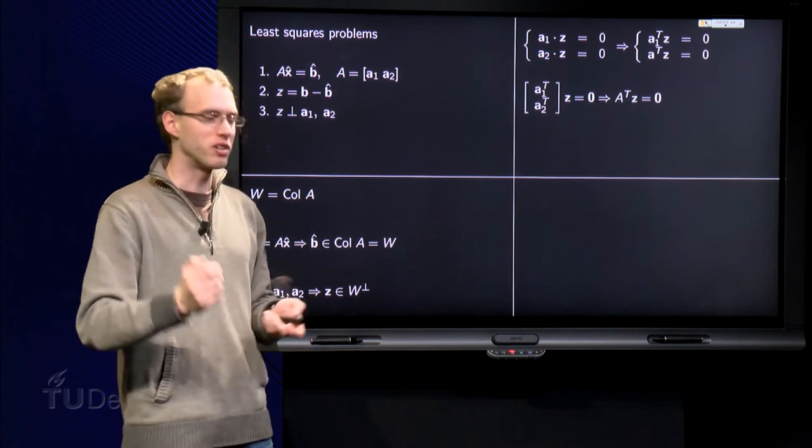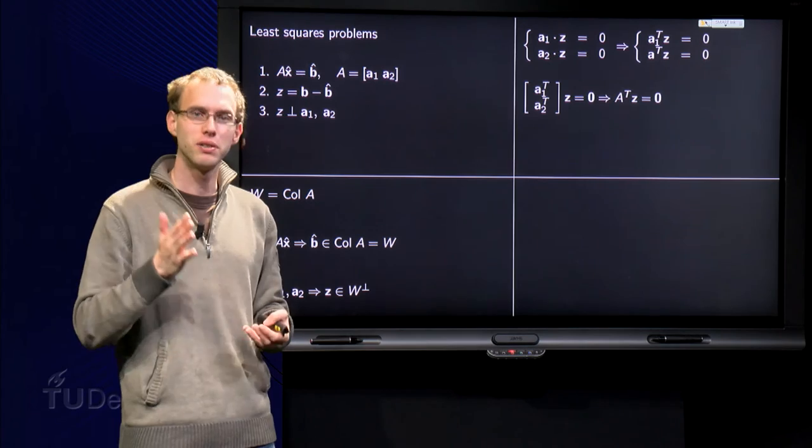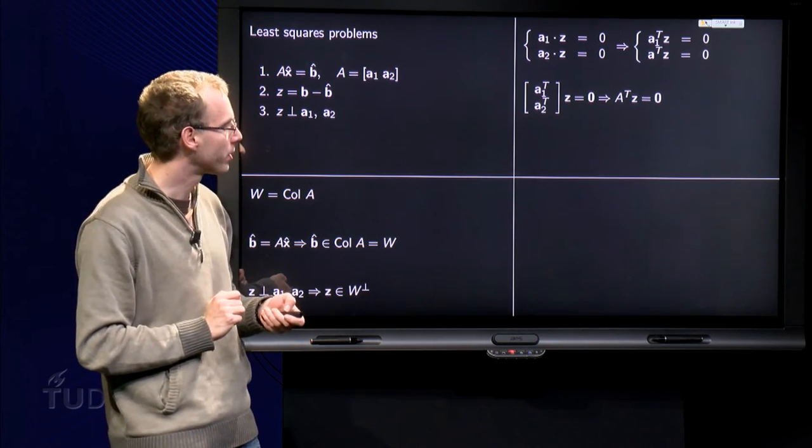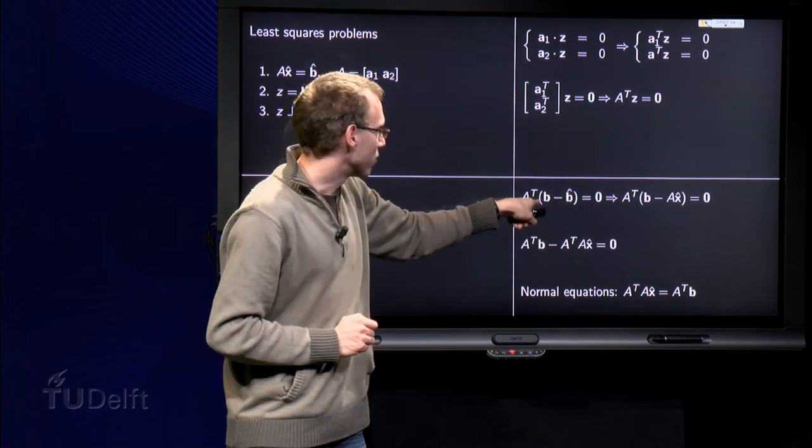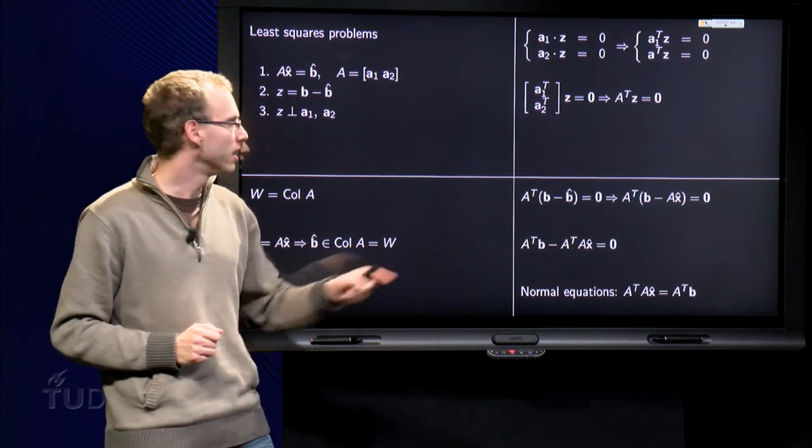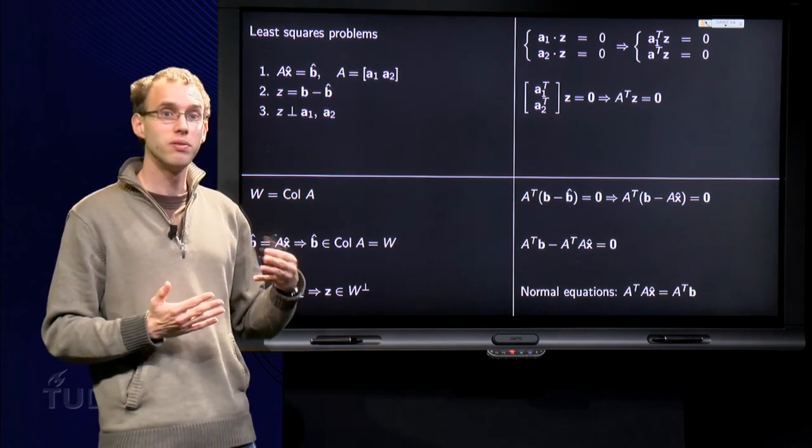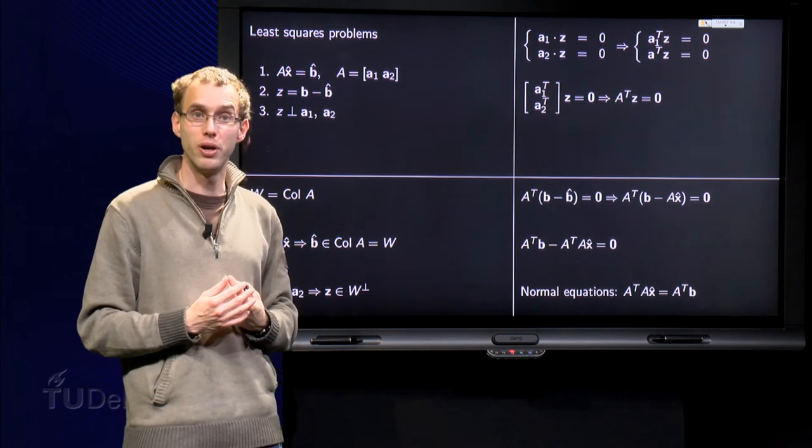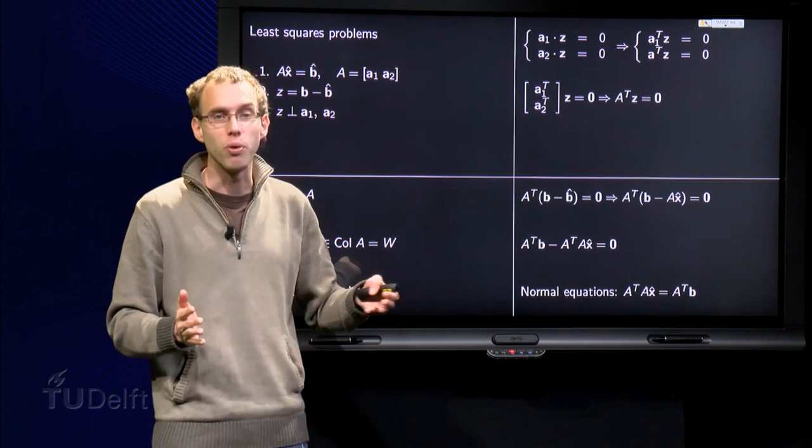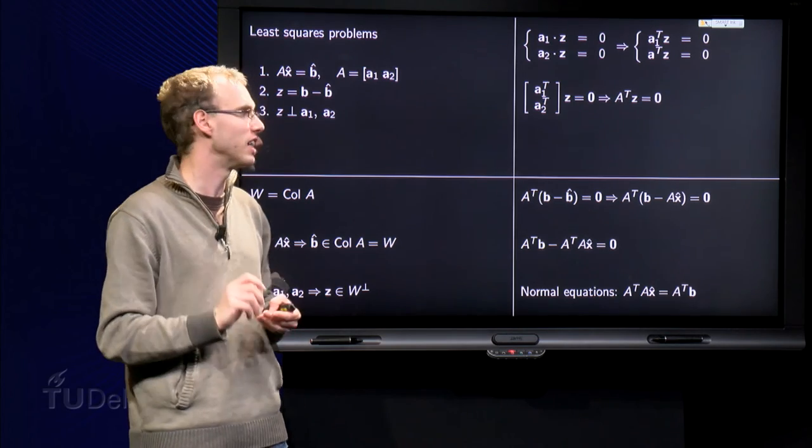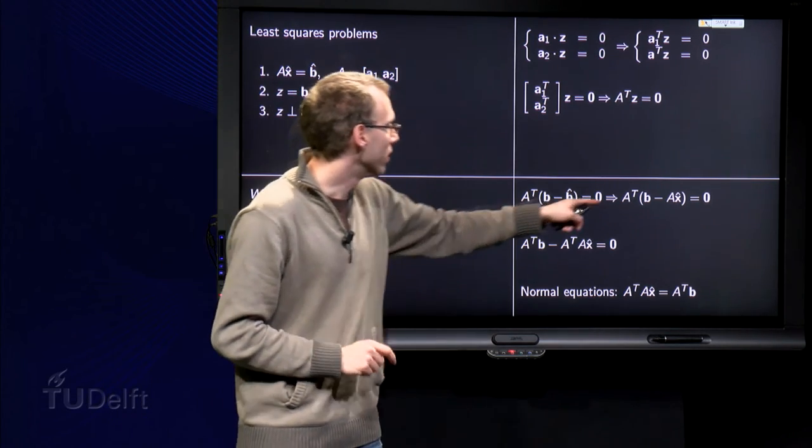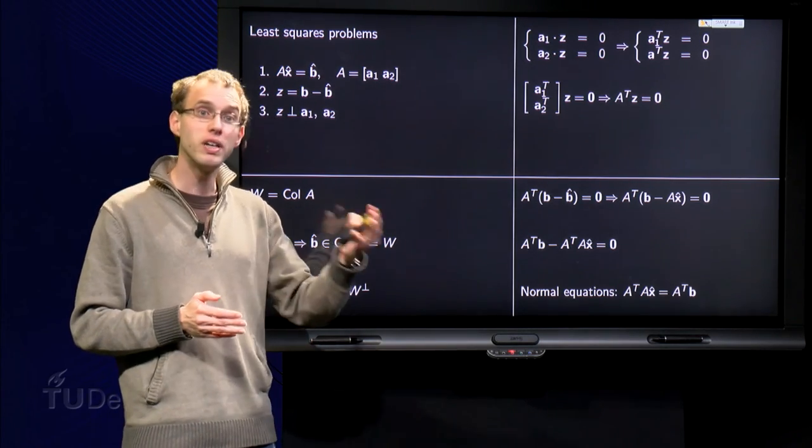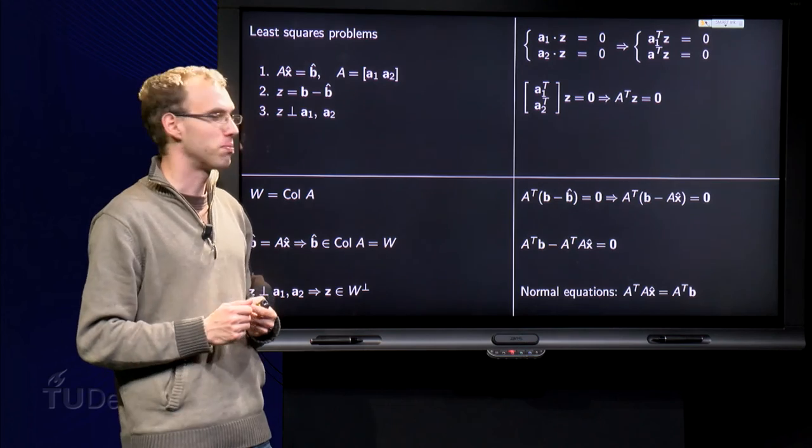But it is nice to rework this a bit and to get an equation where only x hat is present, because that is our final goal. We write z equals b minus b hat equals zero, then we have an equation where we know a and b, and b hat is the only unknown, so with this equation we could in principle compute b hat. But we want x hat, no problem, we know b hat equals a times x hat. So now we have an equation where only a is present and where only the factor b is present.